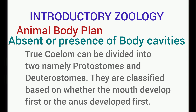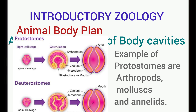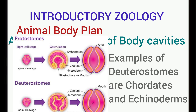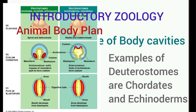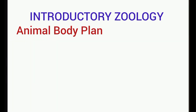Examples of protostomes include phyla such as Arthropoda, Mollusca, and Annelida. Examples of deuterostomes include Chordata as well as Echinodermata. Again, in the protostome the mouth develops first, while in the deuterostome the anus develops first.